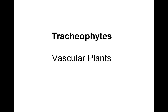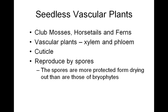The tracheophytes — these plants have vascular tissue made up of phloem and xylem. We begin our discussion of the tracheophytes with the seedless vascular plants. Examples are club mosses, horsetails, and ferns. These plants have xylem and phloem vascular tissue, a cuticle to prevent desiccation, and like the bryophytes, reproduce by means of spores. The spores are more protected from drying out than those of the bryophytes.